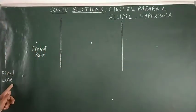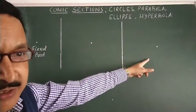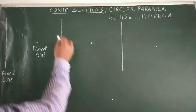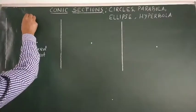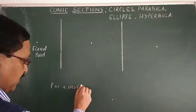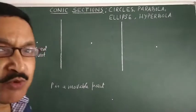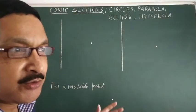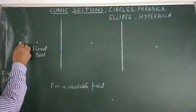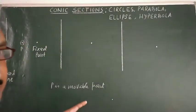Let us consider there is a fixed line and a fixed point. There is a movable point P. The movable point P can move in three different styles only — there is no other style other than these three.